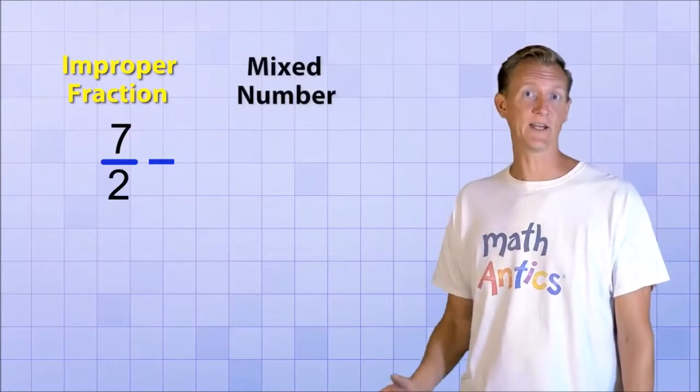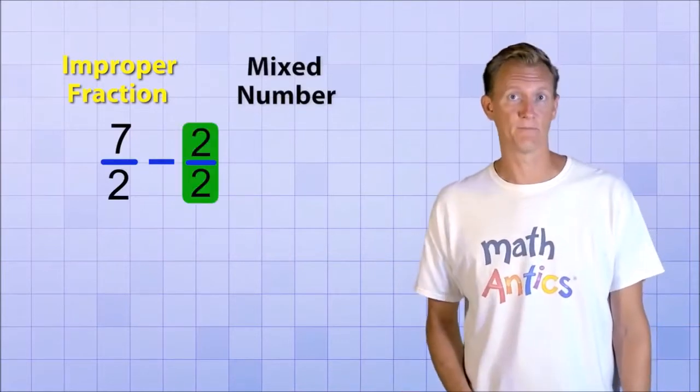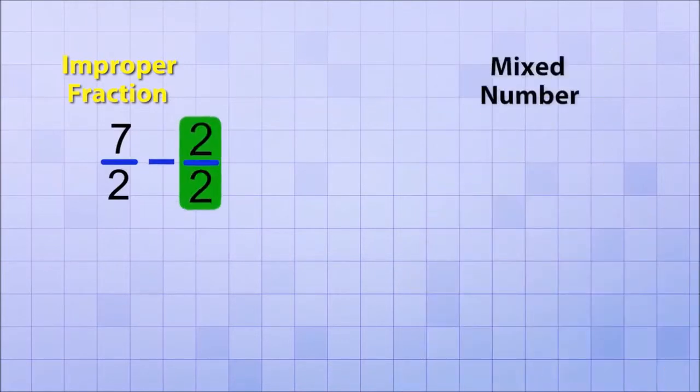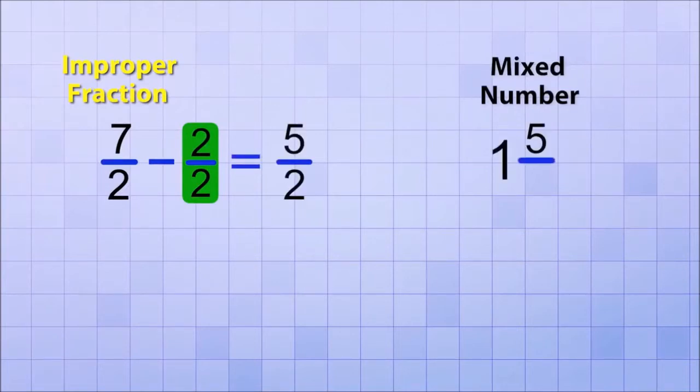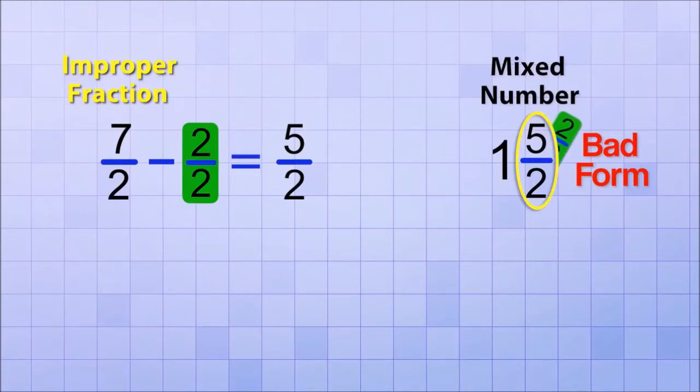First, let's try subtracting out just one whole fraction. 7 over 2 minus 2 over 2 equals 5 over 2. That means we can write 7 over 2 as the mixed number 1 and 5 over 2 since we subtracted out one whole fraction and had 5 over 2 left over. And even though that's true, it's bad form because 5 over 2 is still an improper fraction, which means that there's at least one more whole fraction hiding in there that we could have subtracted out.